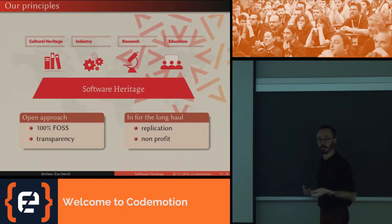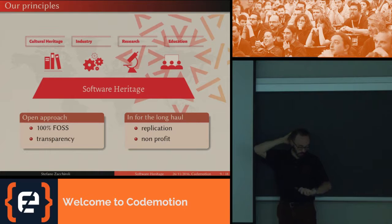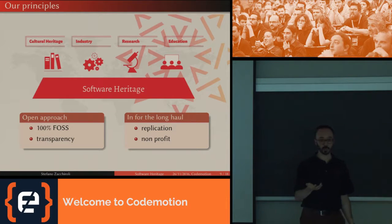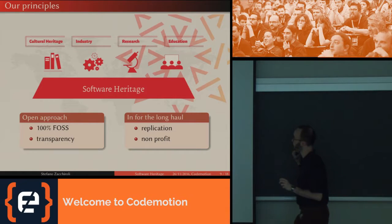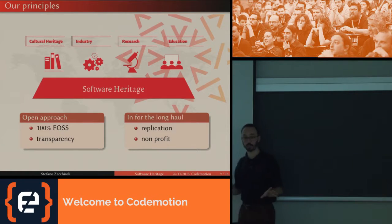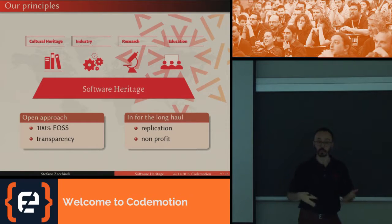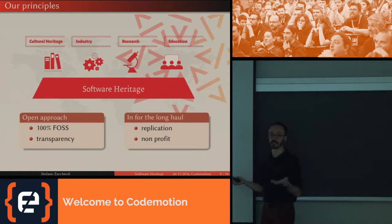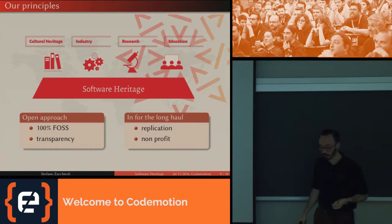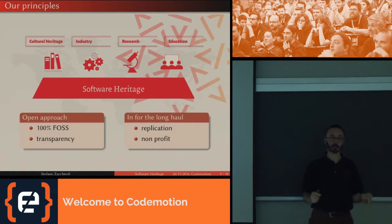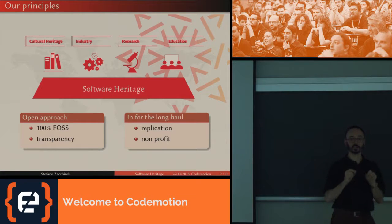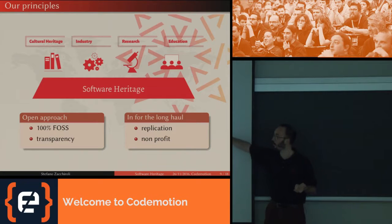We are adopting a kind of Unix philosophy here: we're trying to do only one thing — archiving all the source code that is out there — but that's the only thing we're trying to do. On top of this, we can serve multiple use cases. We can serve cultural heritage preservation: UNESCO recognizes the need of salvaging digital information, and source code is a big part of that. There are also industrial applications, like companies tracking where a specific open source product has been deployed so that when a vulnerability is discovered, you know which devices need to be fixed.